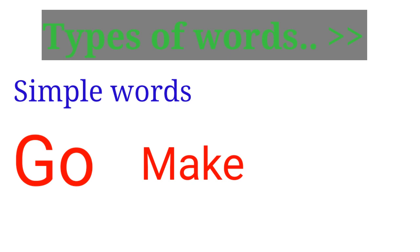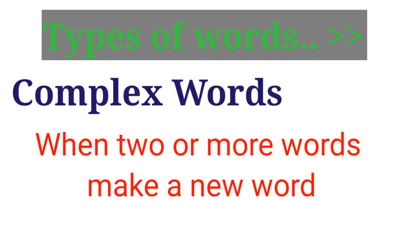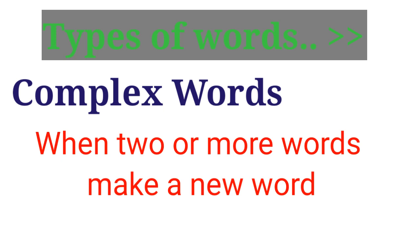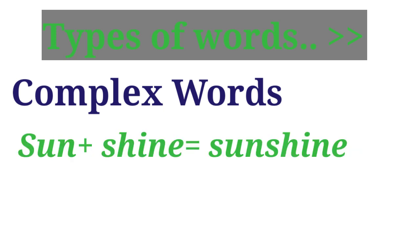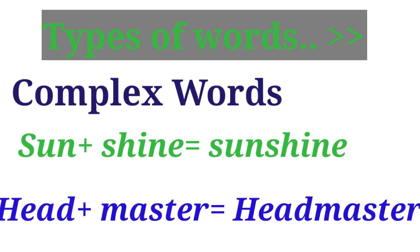Complex words: when two or more words make a new word. Jab koi do words hote hain wo milke ek naya word banate hain. Jaise hum likhte hain sunshine. Ye koi do words, inka alag alag apna meaning bhi hai lekin ab isko ikattha likho ge to ek alag word ban raha hai. Jaise headmaster - head ko hum alag likhe uska alag meaning, master ka bhi alag meaning hai, ikattha likhe uska alag meaning.